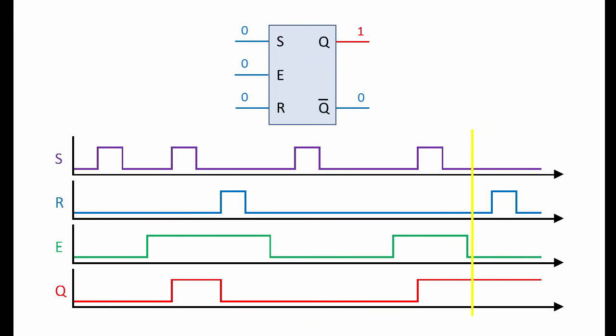E goes to zero, the latch is disabled. R goes high, but Q doesn't drop, it remains in its high state.